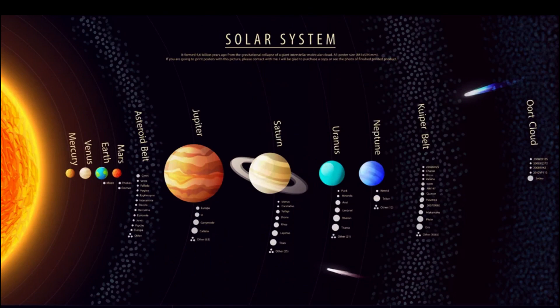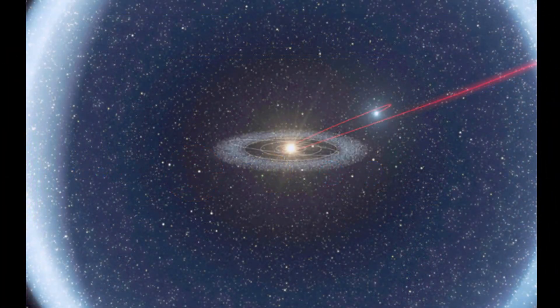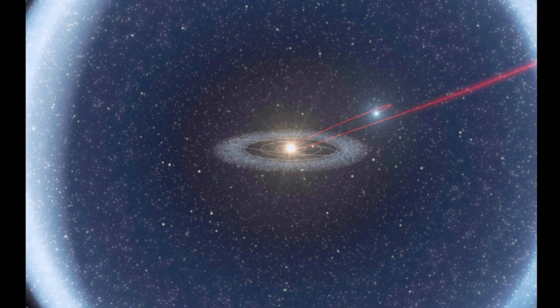The Kuiper Belt is a region beyond Neptune that contains many small icy objects, including dwarf planets such as Pluto. The Oort Cloud is a hypothetical region far beyond the Kuiper Belt that may contain trillions of icy objects.